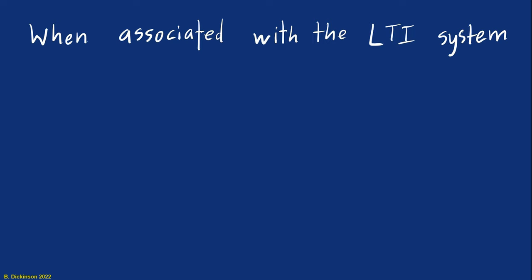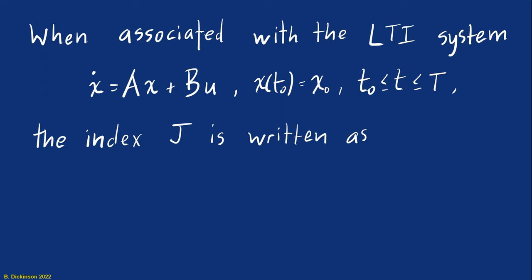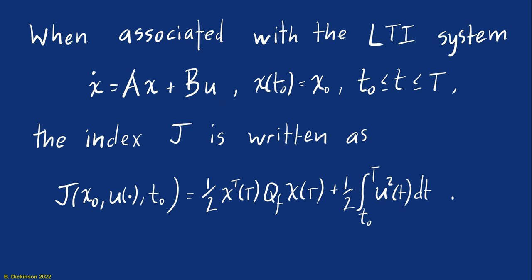A final note about the cost function. When we associate the LTI system, our kinematics, with that cost function, then that cost function becomes dependent on the initial condition and the initial time of the kinematics. And because of that, we write J as a function of those initial conditions. And so you see it down here. There also in J is U of a dot. That dot is just meant to represent that U is a signal as opposed to a discrete value. For example, if I were to write U of T, well, that would just be U evaluated at some intermediate time T. But instead, we mean the signal U over the interval T naught to T.